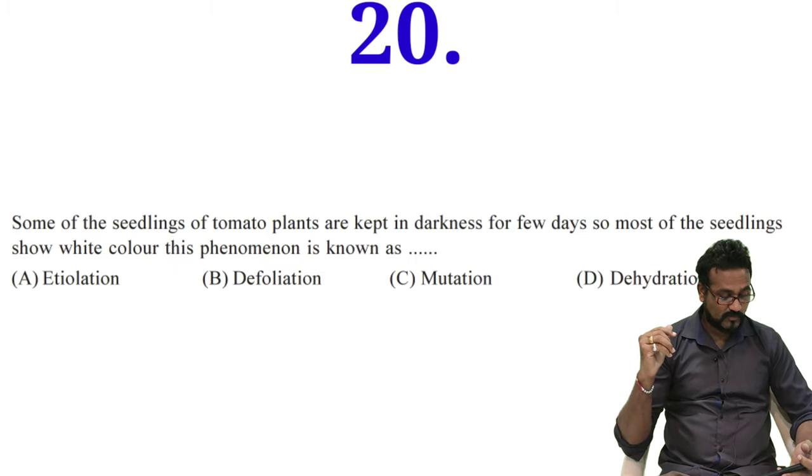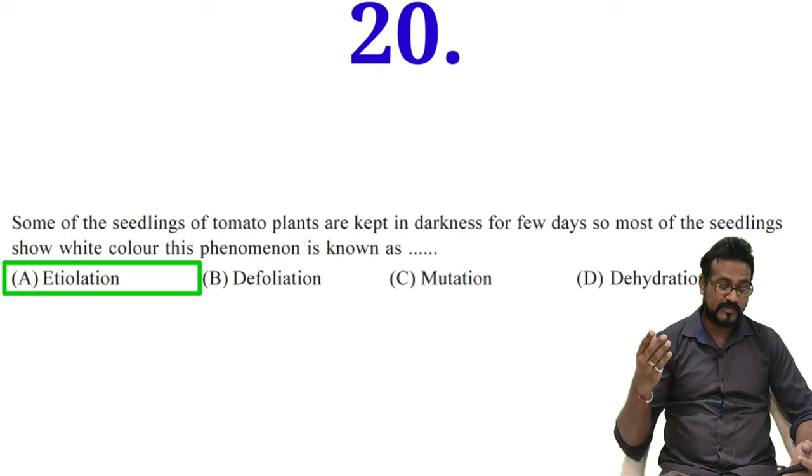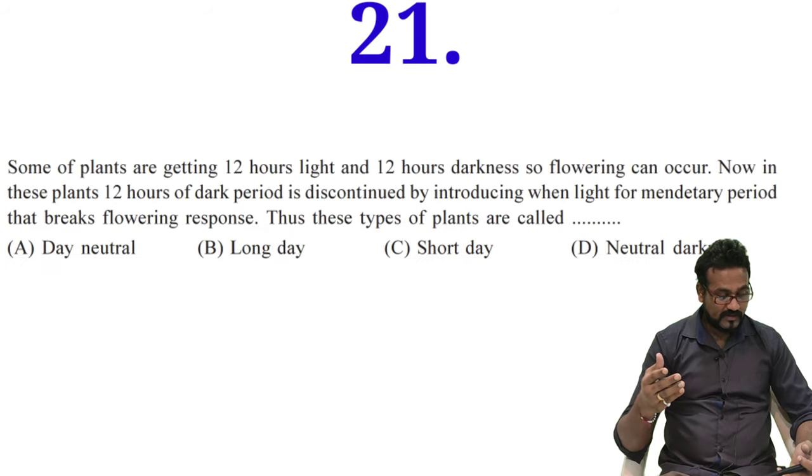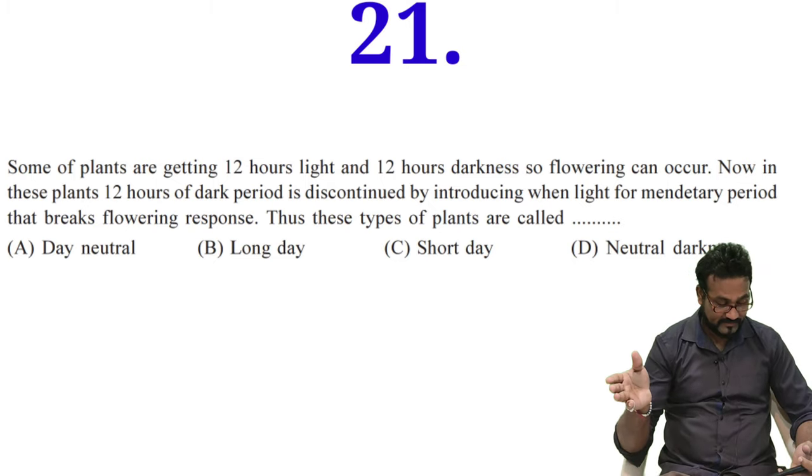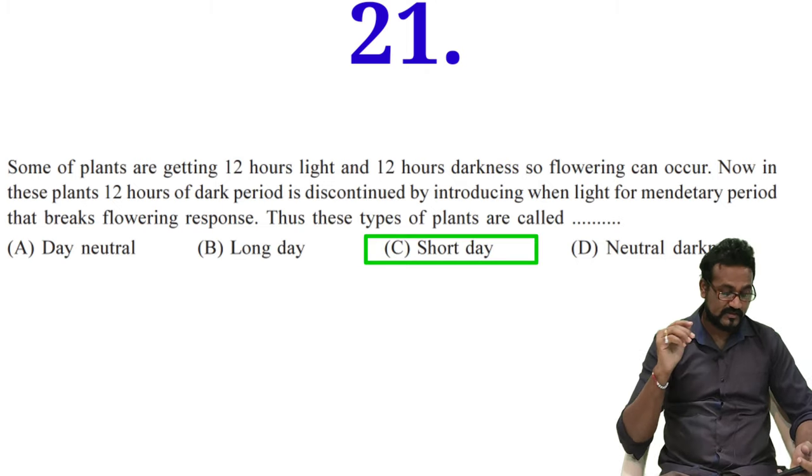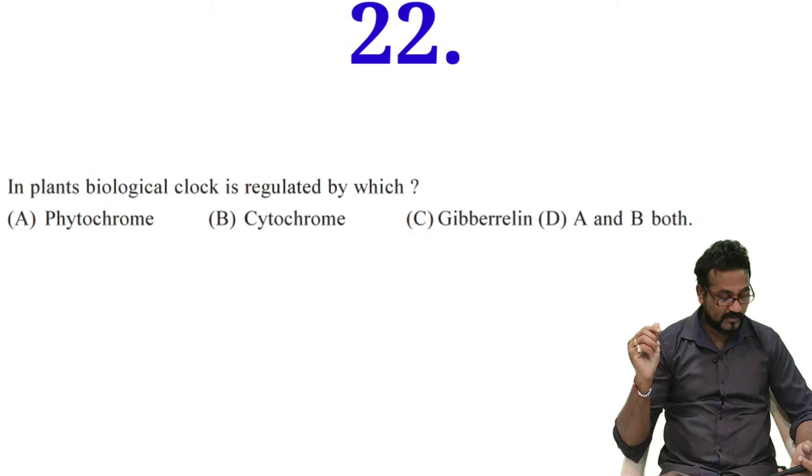Some seedlings of tomato plant are kept in darkness for few days. They do not show any kind of color. It is also known as etiolation condition - etiolated seedling means they do not have faced light, that's why they are white. Some plant getting 12 hour light, 12 hour darkness. Now 12 hour dark period is discontinued by light. Then this type of plant will be known as short day plant because darker period is necessary compared to light period. Biological clock is regulated by which - phytochrome, cryptochrome, gibberellin, or A or B? Option D will be correct answer - phytochrome and cryptochrome are correct answer.